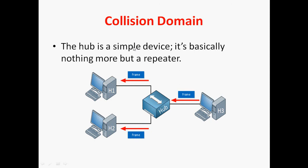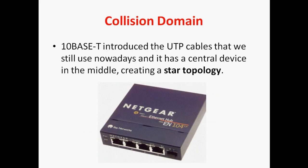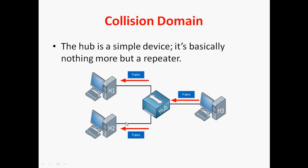Hub is a simple device — it's basically nothing more than a repeater. In a hub, if one port receives an electrical signal, it will pass that signal to the rest of the ports. Here I am using hub as a star topology. H3 wants to send a frame to H1. Once the hub receives the frame, it will send that frame to all other ports — to H1 as well as H2.